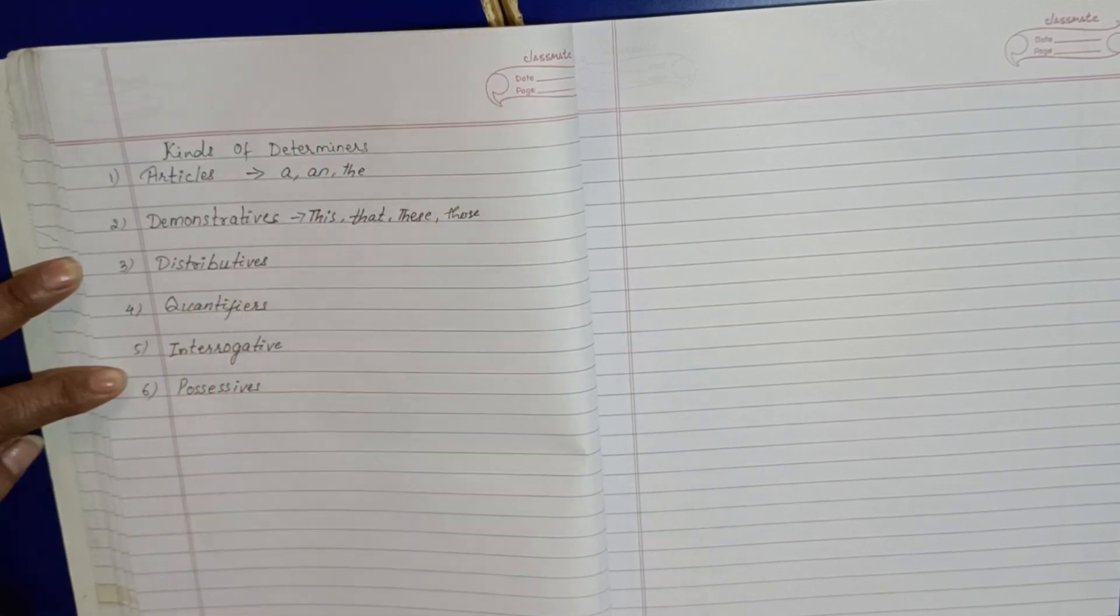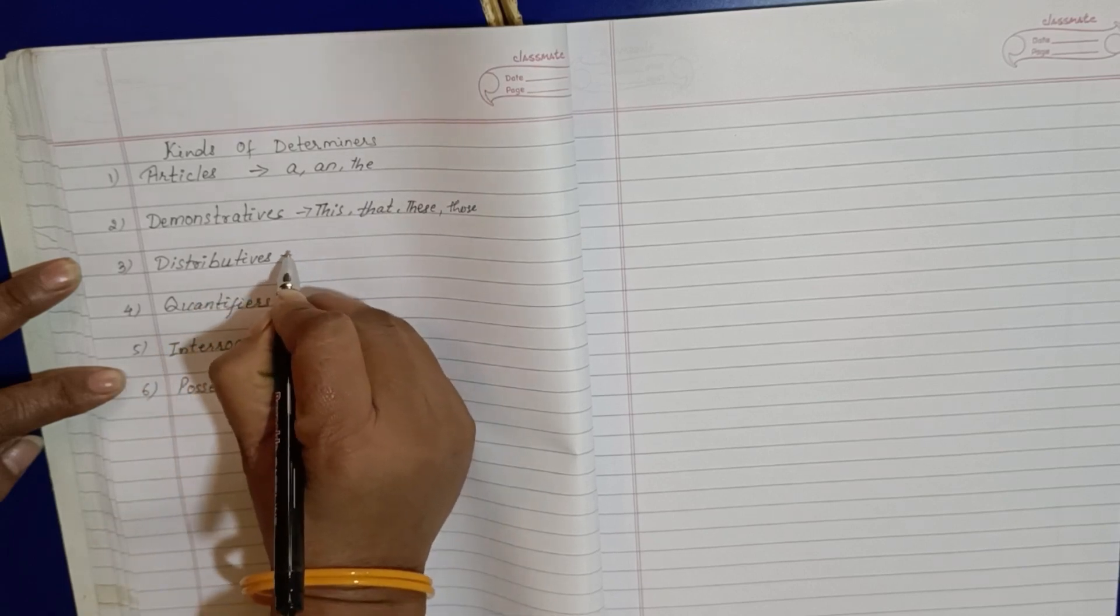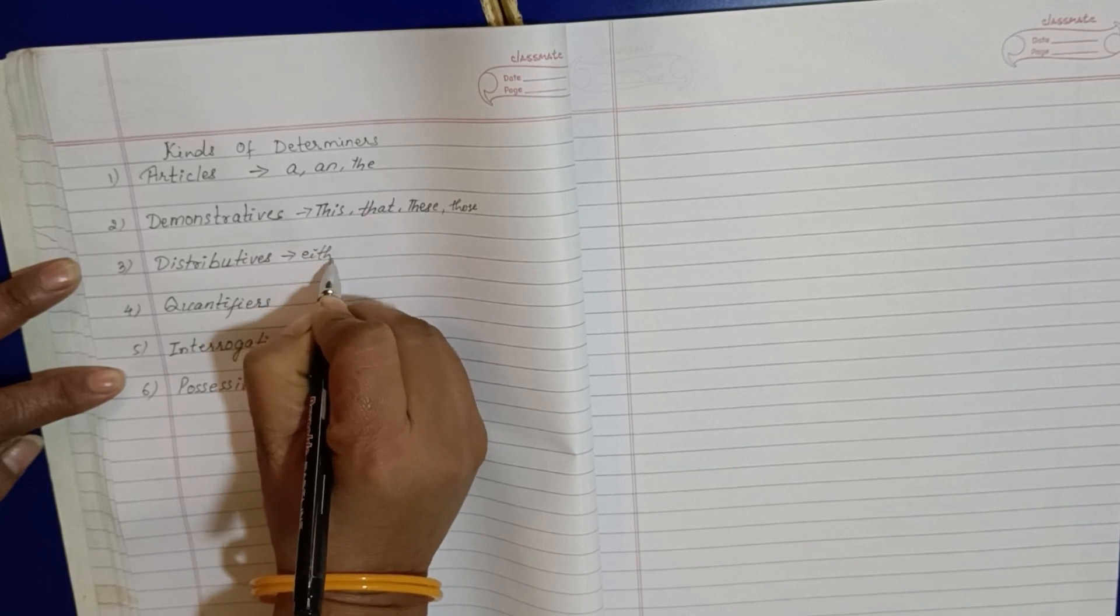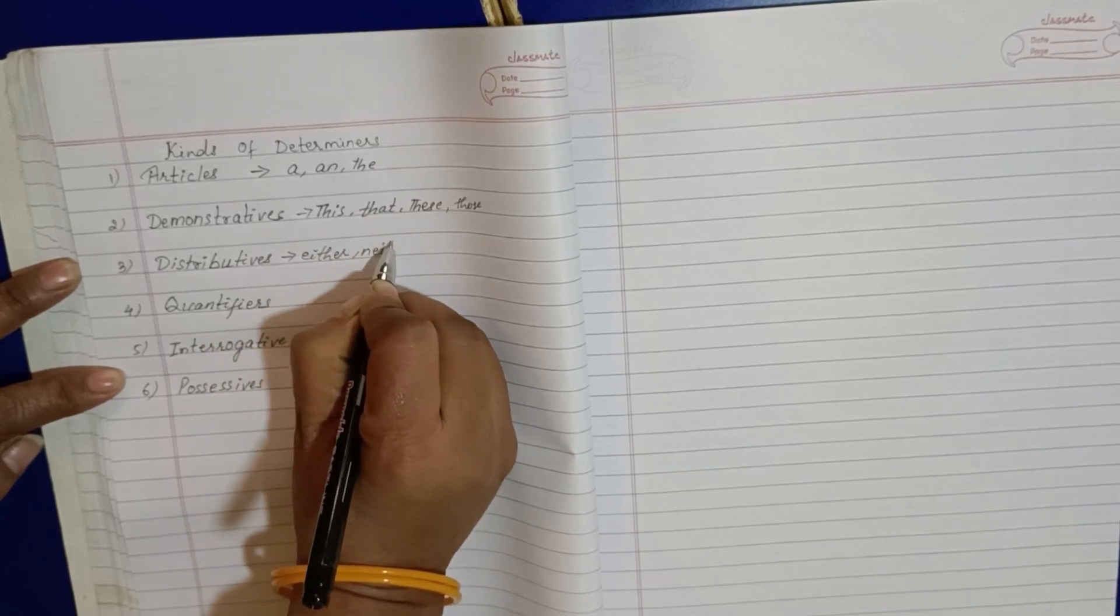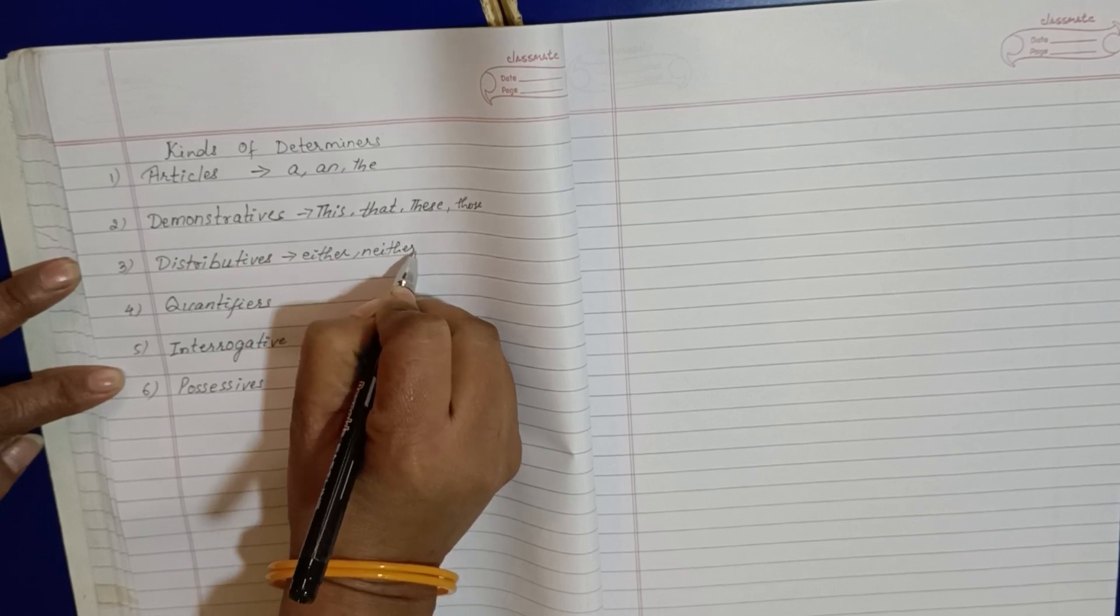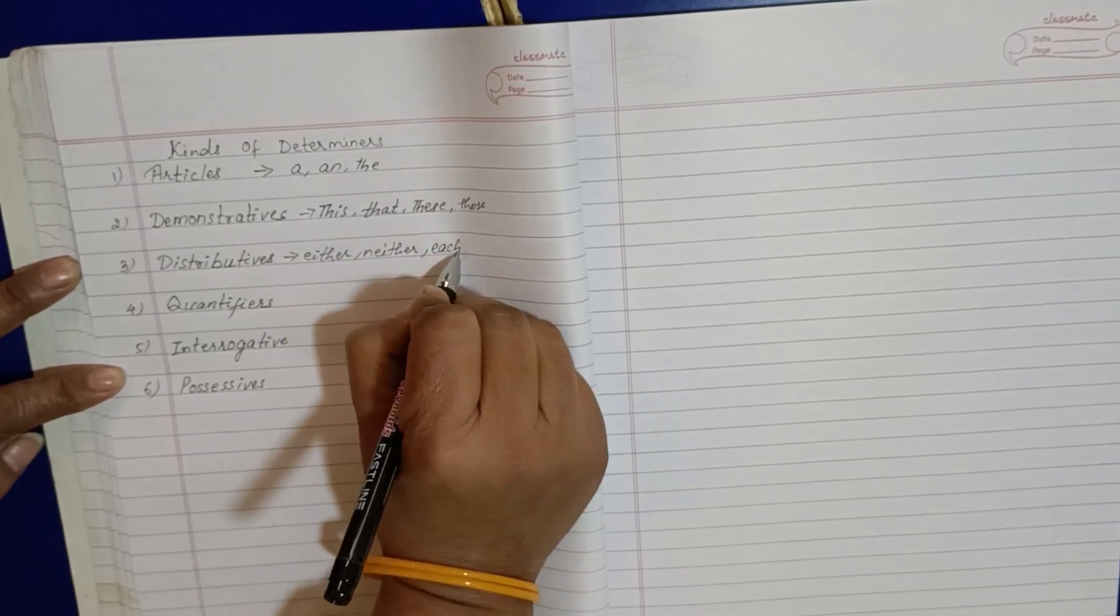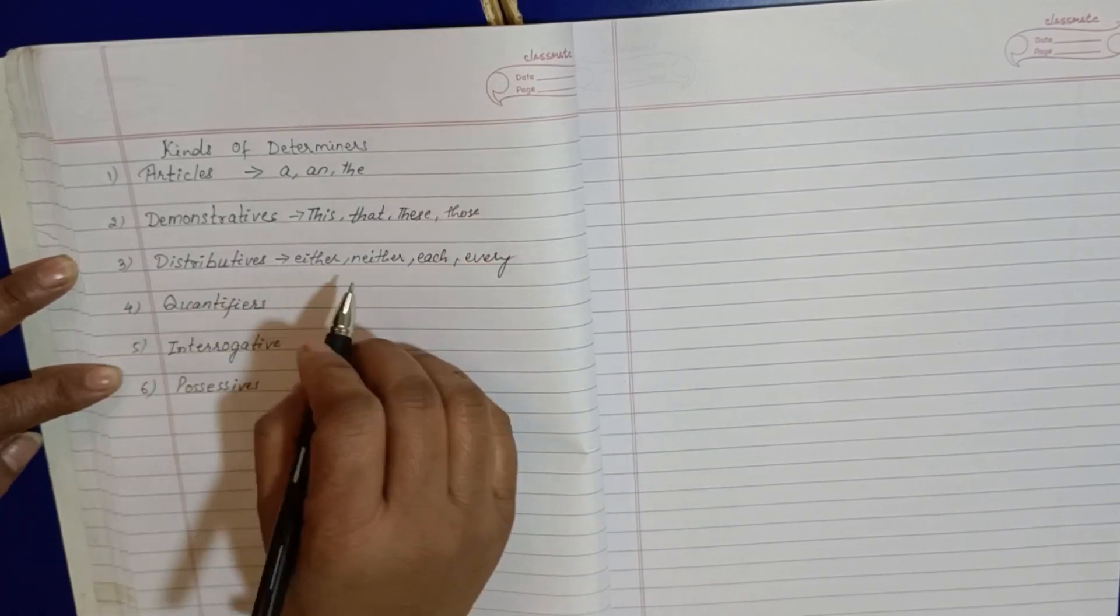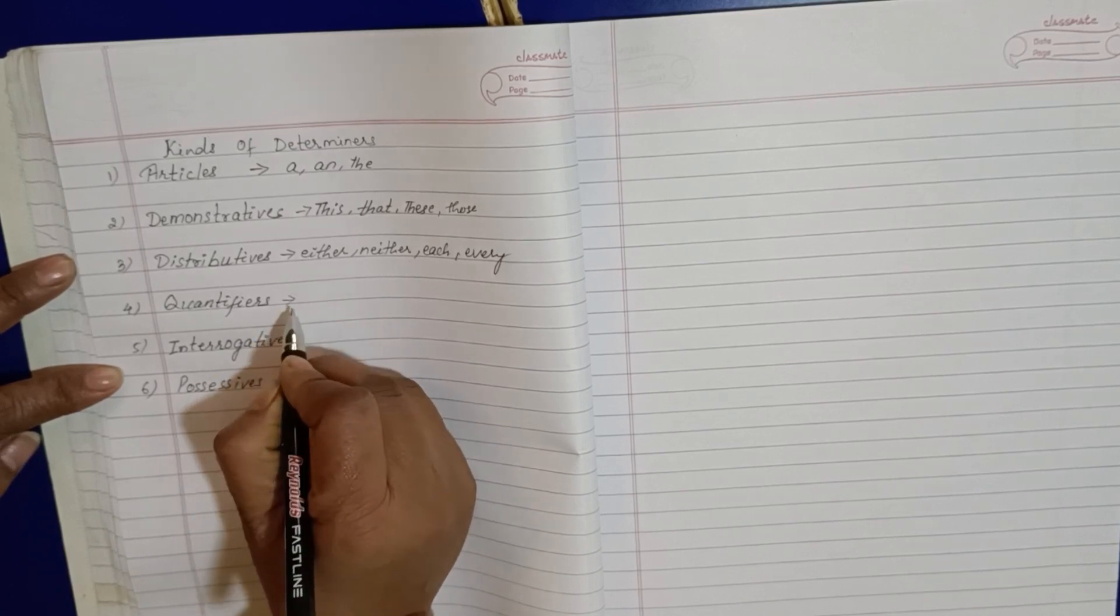And in distributives, what will be? It will be either, neither, each, every. These are what? Distributives.